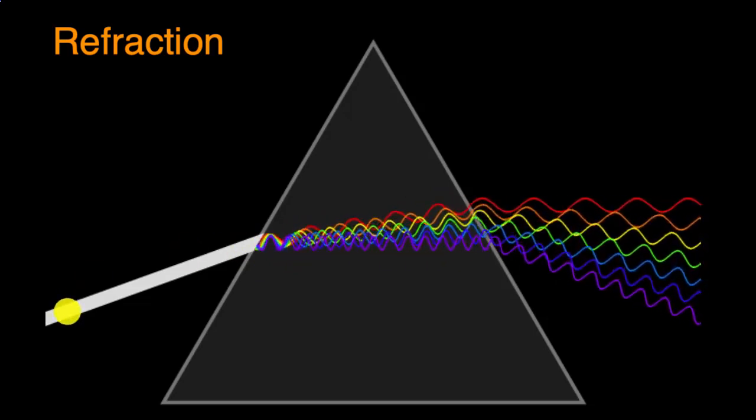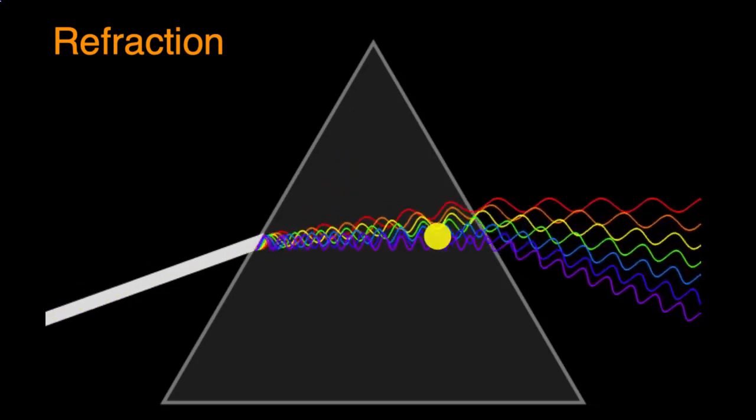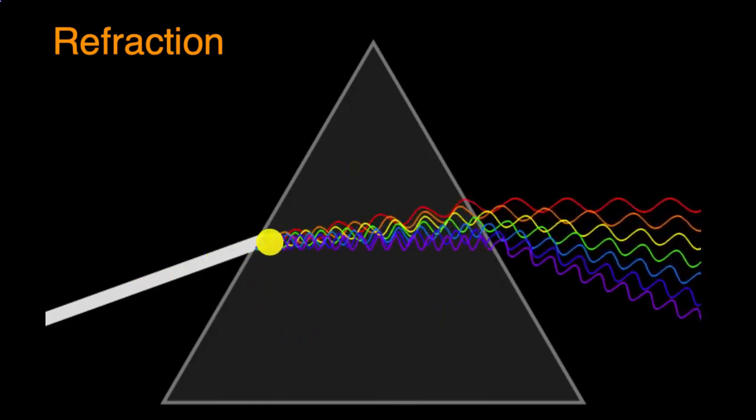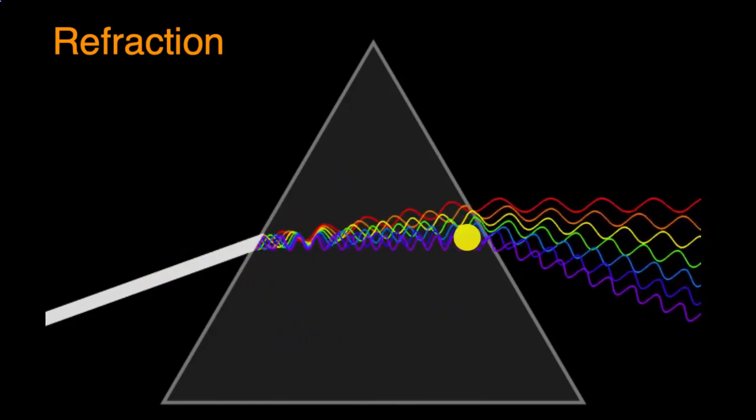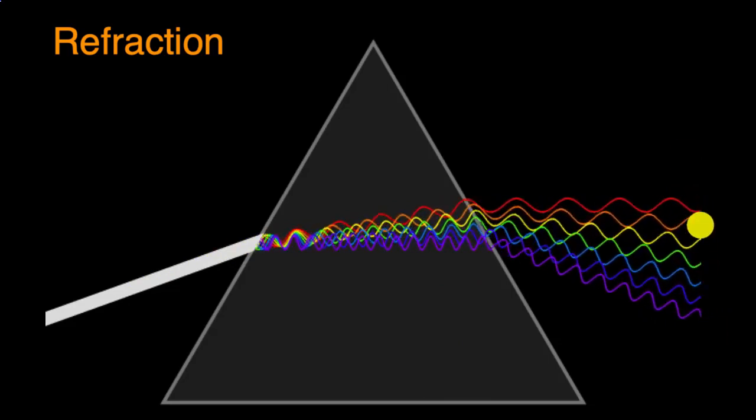When we have white light, it has all of the visible wavelengths in it. But when it hits a prism like this, if you imagine a triangular piece of glass or crystal, and it hits it at an angle, well then the different wavelengths spread out. And if you were to put a piece of paper here, you would see a rainbow.